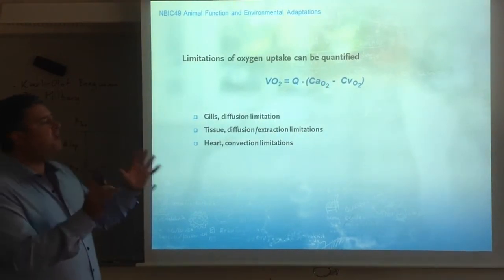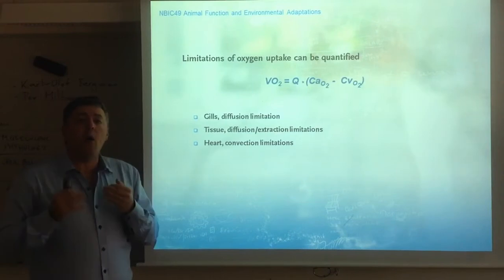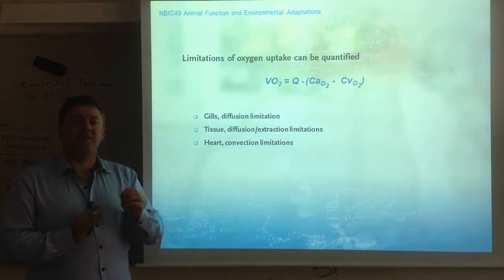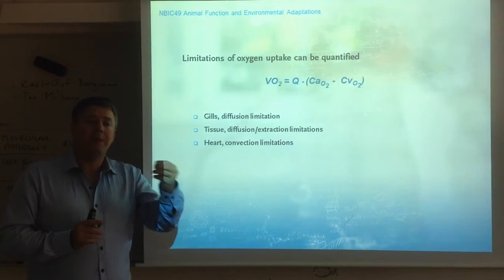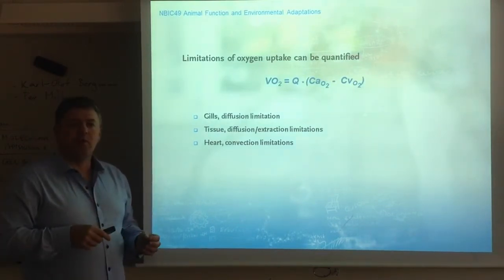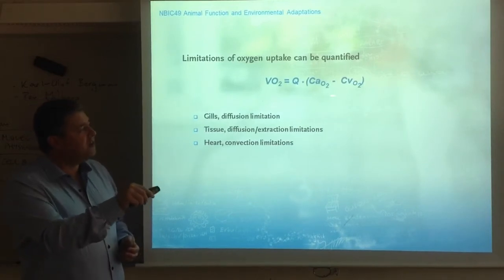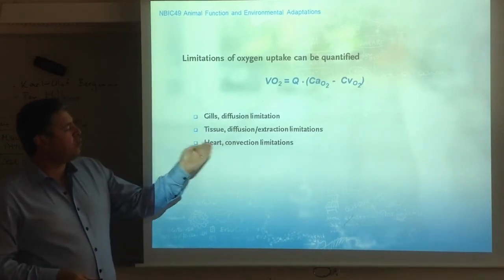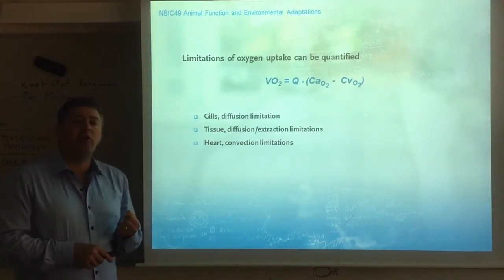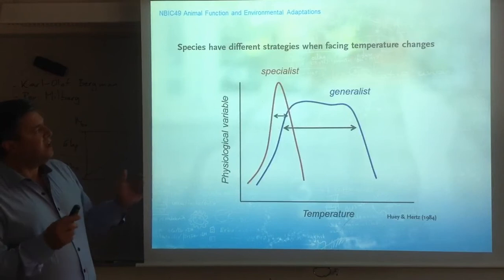What we are trying to understand now is how temperature can have an effect on aerobic scope. Aerobic scope is simply oxygen consumption. Effects on aerobic scope may be due to changes or problems with transport in the heart, or with extraction in the gills, or the delivery to the tissues. Different species have different strategies when facing temperature changes.